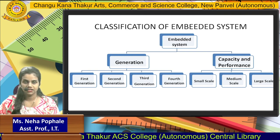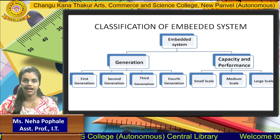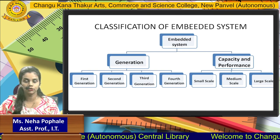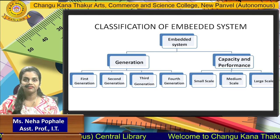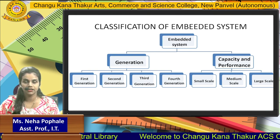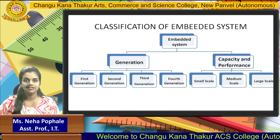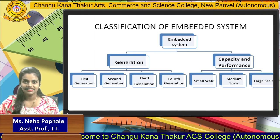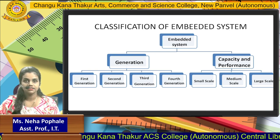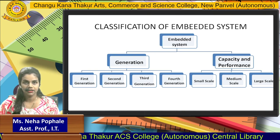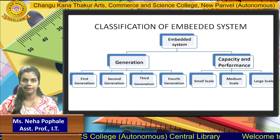In the first generation, Embedded Systems are designed using 4-bit to 8-bit microprocessors and the firmwares are written using assembly language, also called low-level language. In the second generation, Embedded Systems are developed using a 4-bit microprocessor or 4-bit microcontroller.